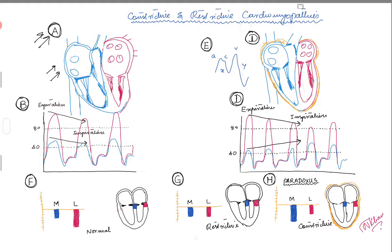It can be amyloidosis, hemochromatosis, or glycogen storage diseases. But the hallmark feature of restrictive cardiomyopathy is that the atria are huge — the atria are big, and the LV, as compared to the atria, might be small. You might get a still frame or a picture of an echocardiographic image showing large atria.